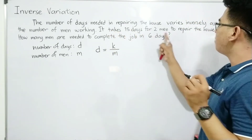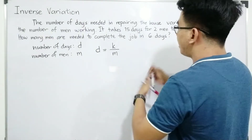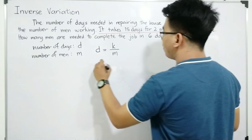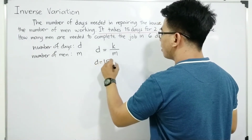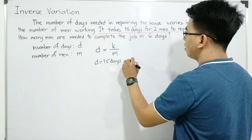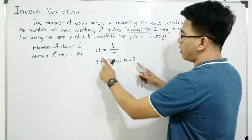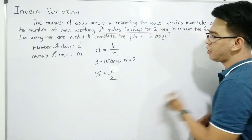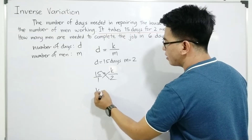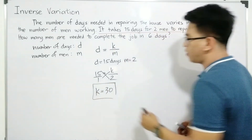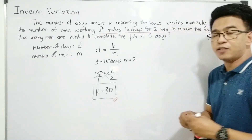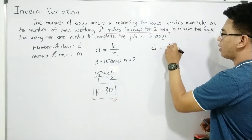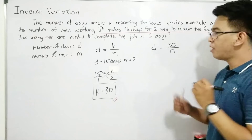It takes 15 days for 2 men to repair the house. This sentence helps us find the constant of variation K. We have D equal to 15 and M equal to 2. Substituting: 15 is equal to K over 2. Cross multiplying, K is equal to 30. This is now our constant of variation. Our new equation is D is equal to 30 over M.